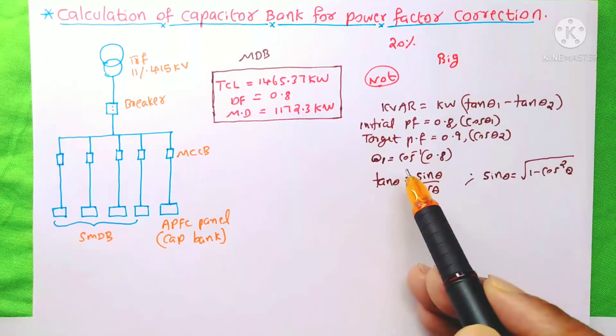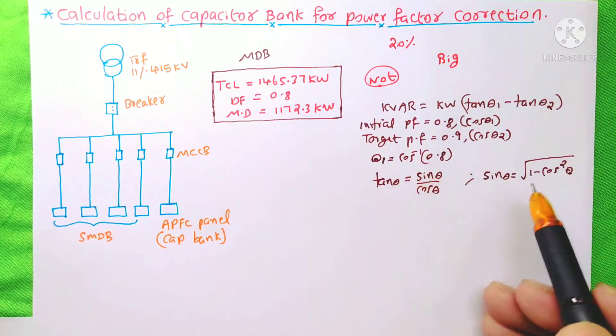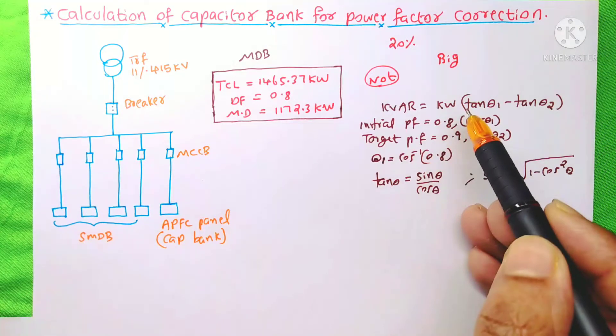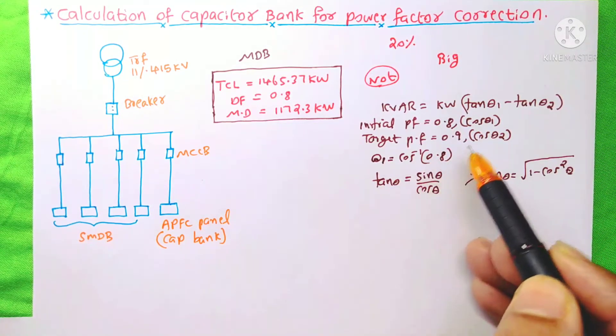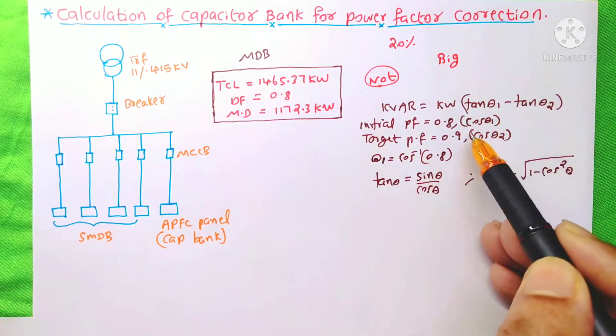So, you can find this theta1 either of this method. The first one is, the theta1 is equal to cos inverse of 0.8 from this equation.